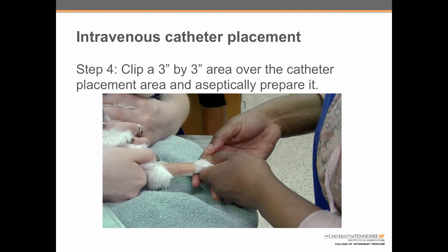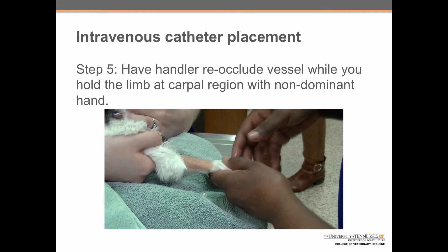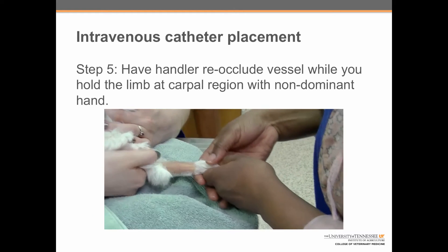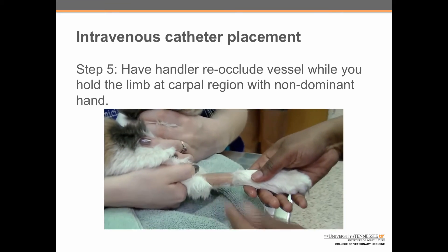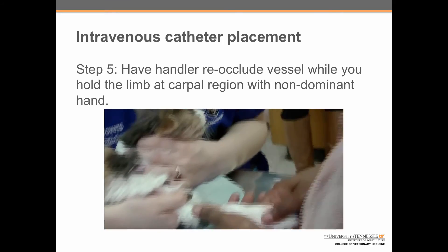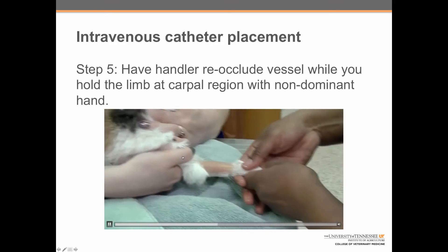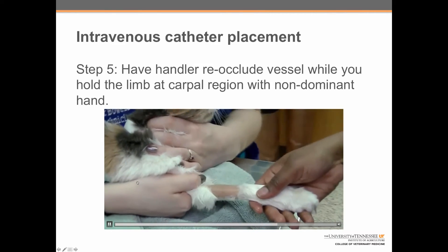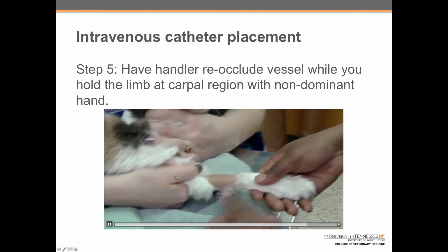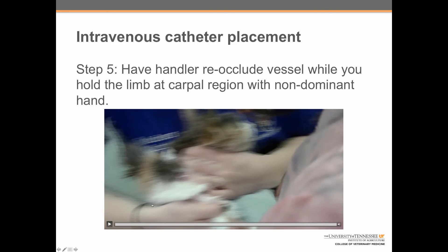We leave the site time to dry. Step 5: have the handler re-occlude the vessel while holding the limb at the carpal region with the non-dominant hand. Here Shanna is getting a good grip on the limb, making sure her hands are clean and dry, while the handler occludes the vessel again by wrapping her thumb across the inside of the elbow and wrapping outward to bring the vessel up into a stabilized position on top of the leg.